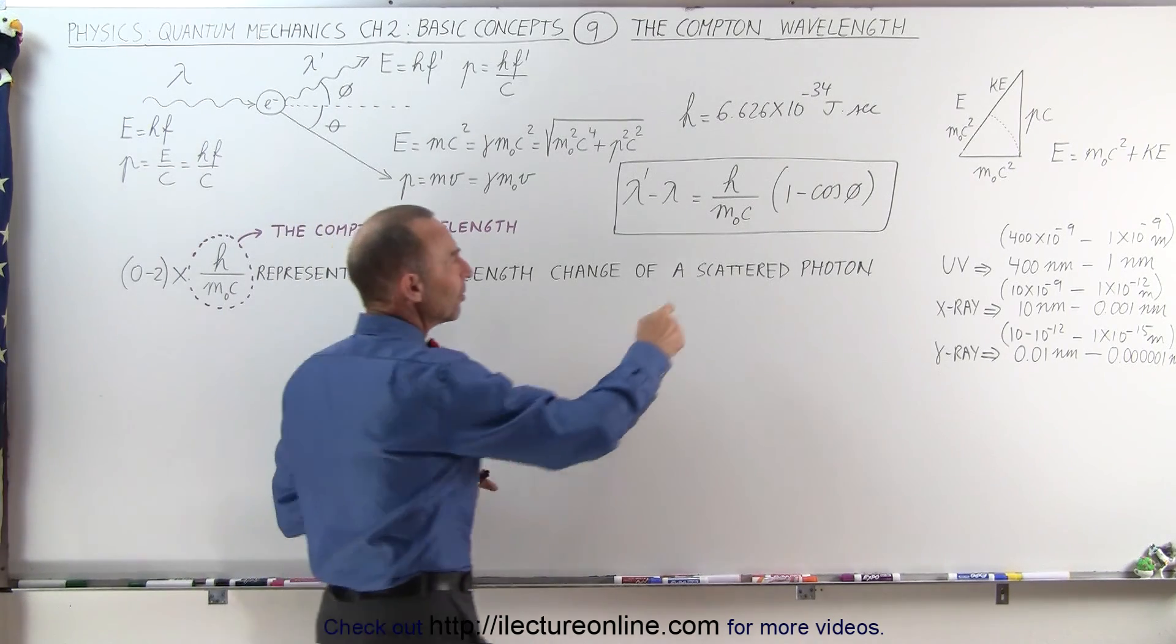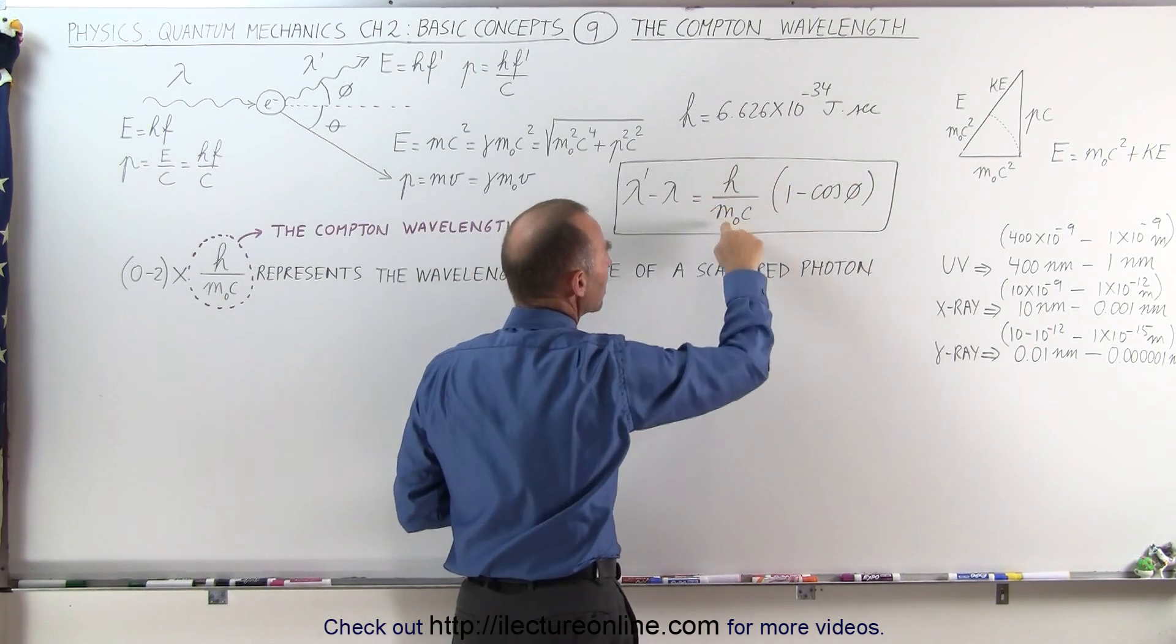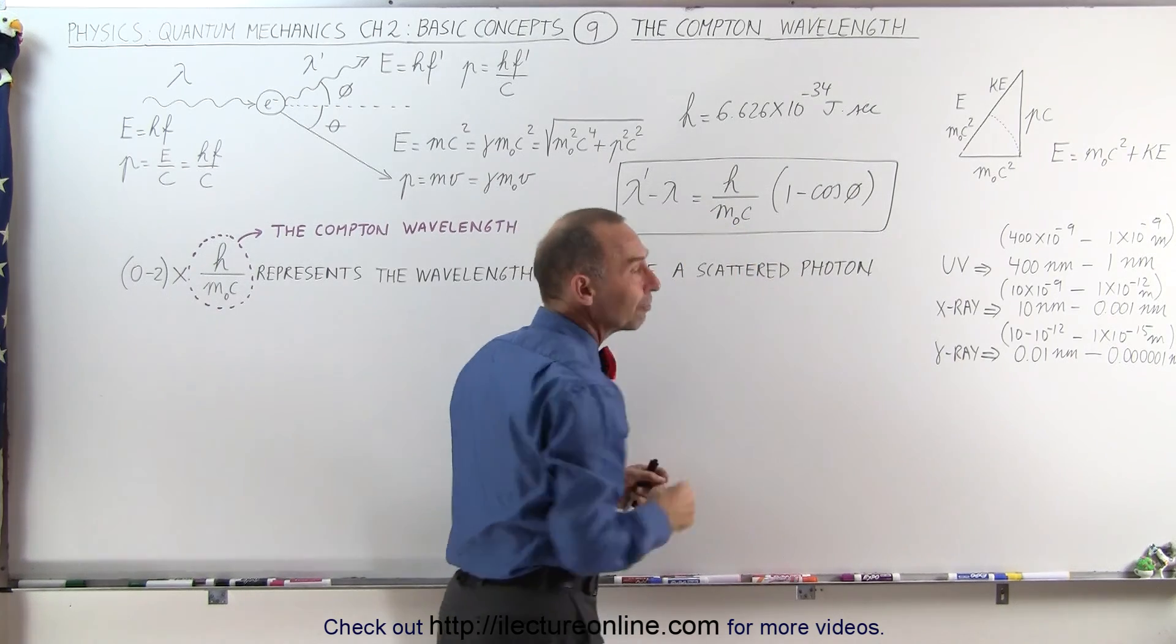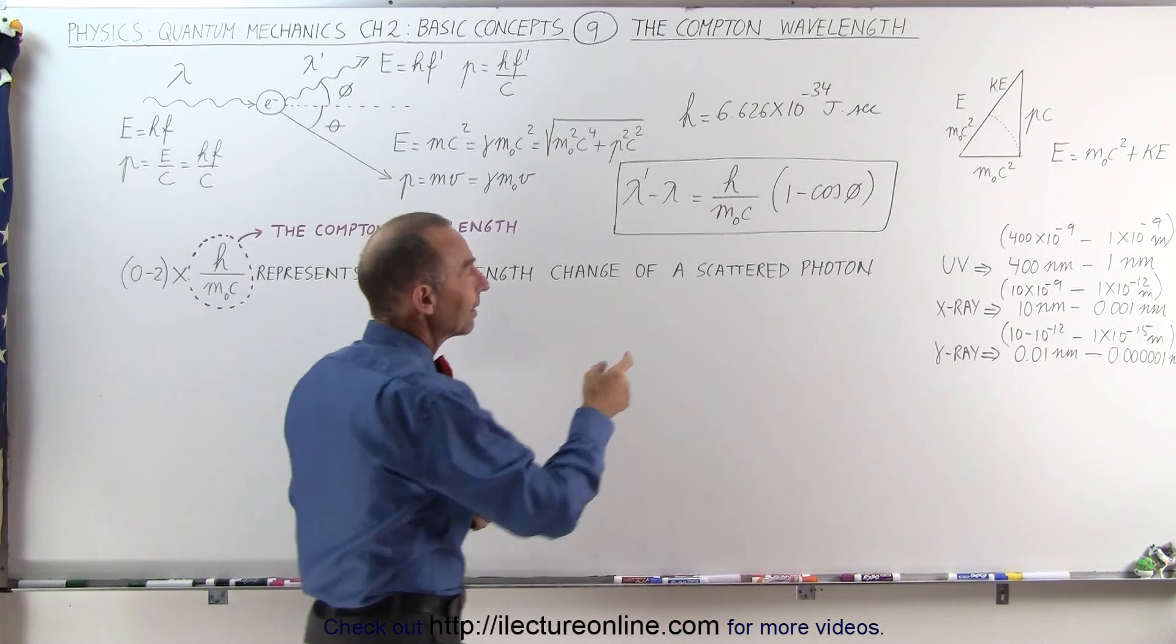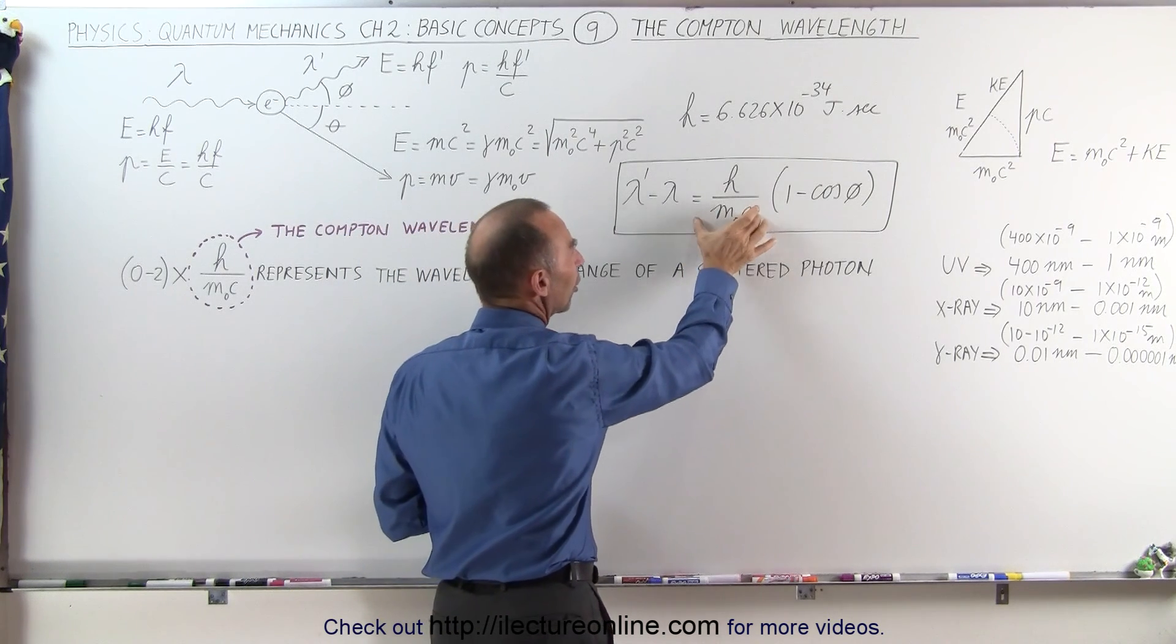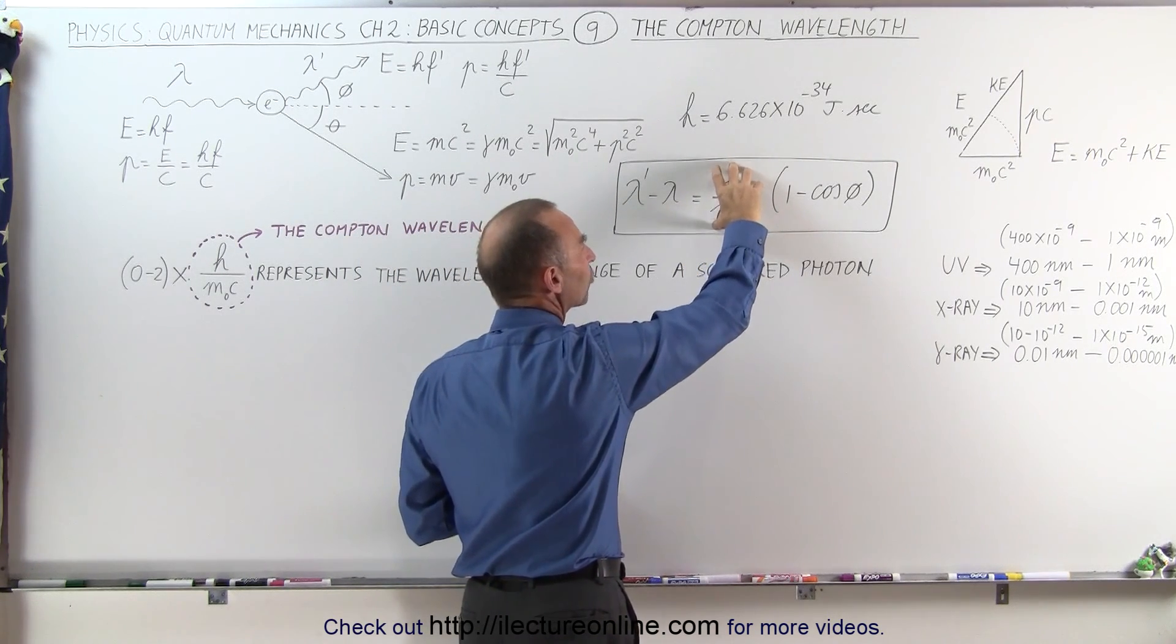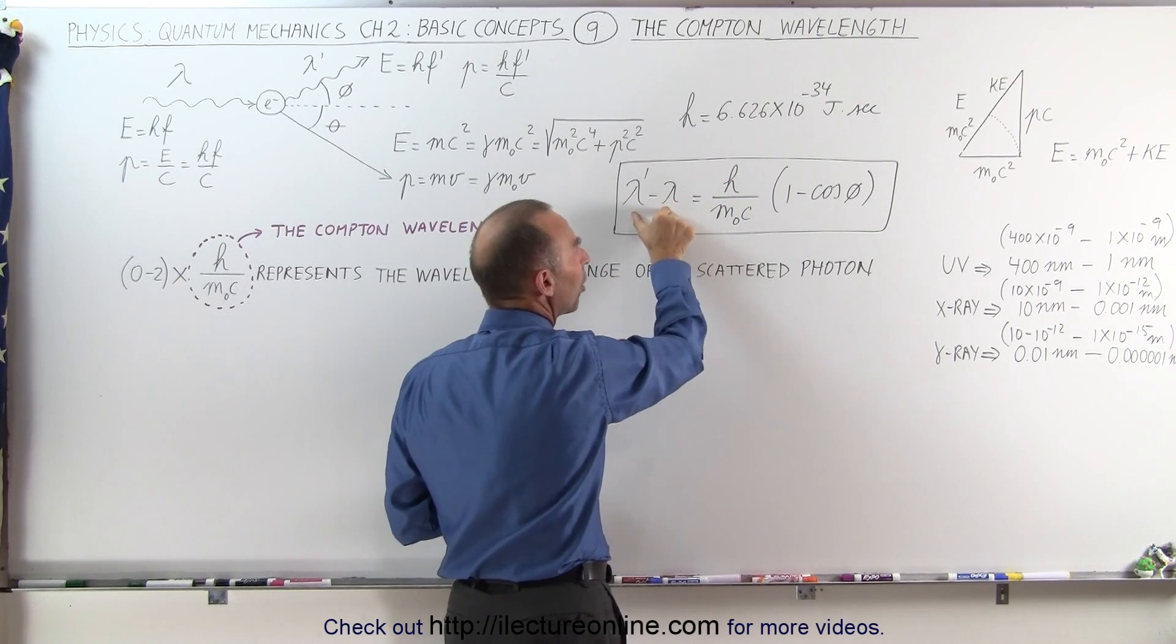Also notice that in the denominator of this quantity right here is the mass of the particle from which the photon scatters. And so you can see that since it's in the denominator for a large mass, this ratio will be very small and the difference will be very small.